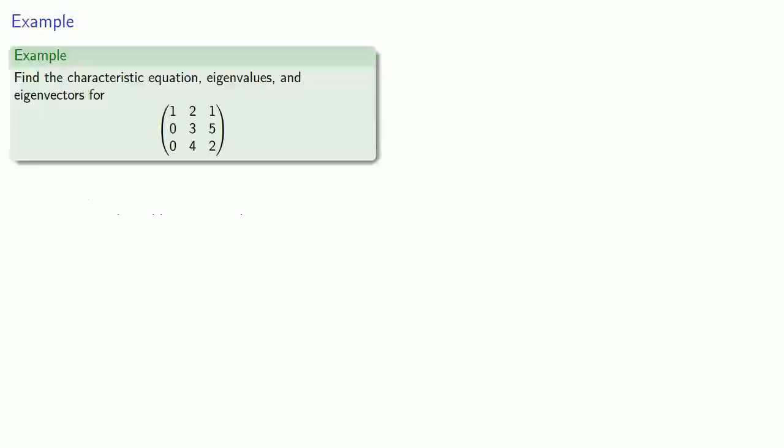For example, suppose we want to find the characteristic equation and all eigenvalues for this matrix. The eigenvalues will be the values of lambda that make our determinant, A minus lambda I, equal to zero. So we'll find the determinant.